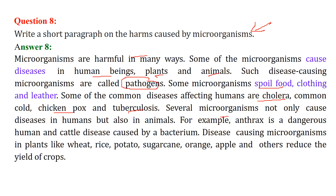Many microorganisms do not differentiate between humans and animals - diseases affect both. Animals suffer from diseases like anthrax, which is caused by bacteria and is very dangerous. Disease-causing microorganisms also affect crops such as wheat, rice, potato, sugarcane, grain, orange, and apple - this leads to a significant reduction in crop yield.